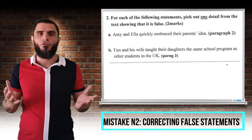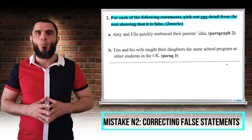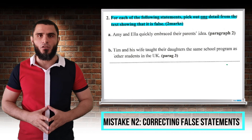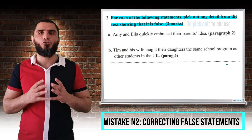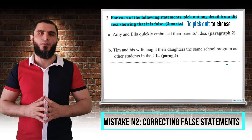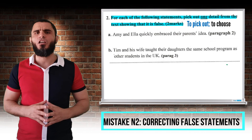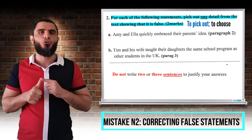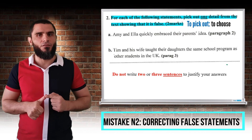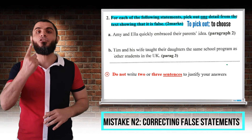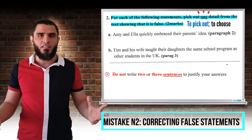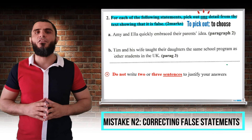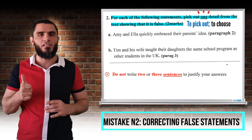The second question is the following: for each of the following statements, pick out one detail from the text showing that it is false. To pick out means to choose, and you have to choose from the text. What are the common mistakes with this question? Number one: do not write two or three sentences to justify your answers. As you can see, the question states one detail, and a detail can be one word or one sentence — it can never be two sentences.